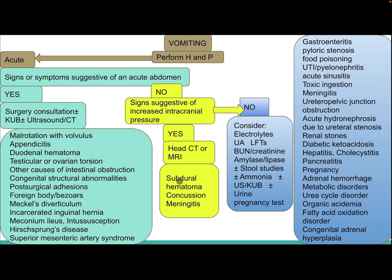If increased intracranial pressure is suspected, perform head CT or MRI. Differential diagnosis includes subdural hematoma, concussion, and meningitis. If not, consider electrolytes, urinalysis, liver function tests, BUN, creatinine, amylase, lipase, stool studies, ammonia, ultrasound, KUB, and urine pregnancy test. Differential diagnosis includes gastroenteritis, pyloric stenosis, food poisoning, UTI, pyelonephritis, acute sinusitis, toxic ingestion, meningitis, ureteropelvic junction obstruction, acute hydronephrosis, renal stone, diabetic ketoacidosis, hepatitis, cholecystitis, pancreatitis, pregnancy, adrenal hemorrhage, and metabolic disorders including urea cycle disorder, organic acidemia, fatty acid oxidation disorder, and congenital adrenal hyperplasia.